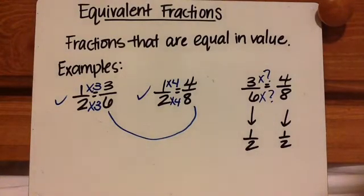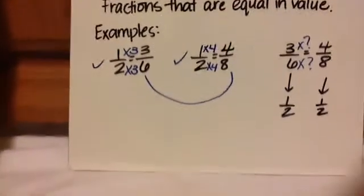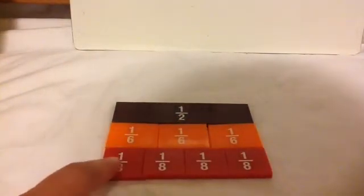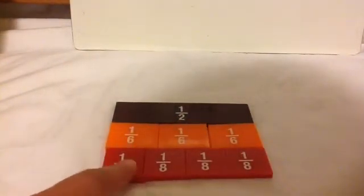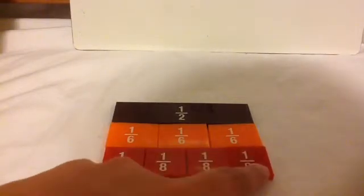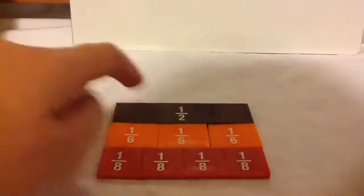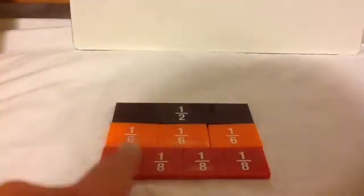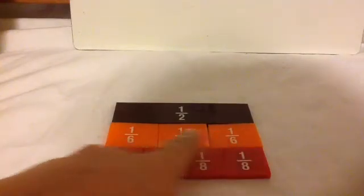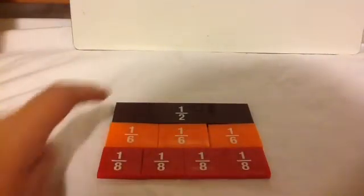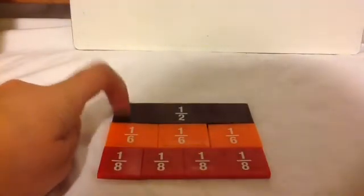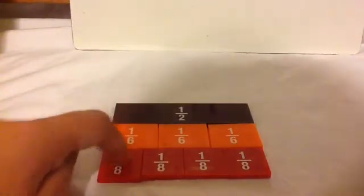In this video I'm going to talk more about equivalent fractions using other ways to show you. One-half equals three-sixths — one, two, three out of six. And one-half is equal to four-eighths — one, two, three, four eighths is also equal to one-half. So therefore, four-eighths is also equal to three-sixths. Because they're both equal to one-half, they're equal to each other.